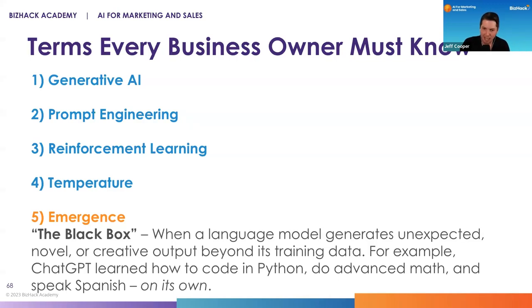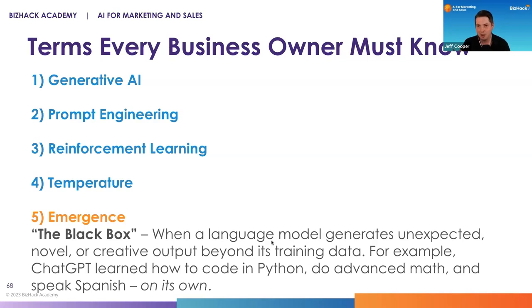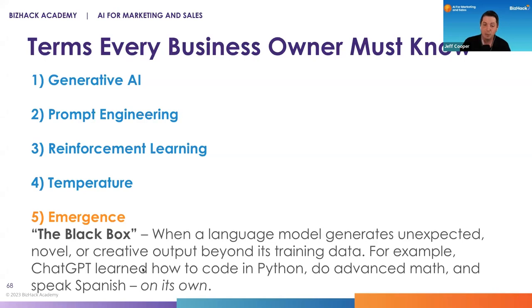Emergence — this is the black box. When you train language models with larger and larger sets of data, or add layers to the neural networks, you start to see emerging features you didn't explicitly train: the ability to write code, do math, speak Spanish, answer questions. These are things the machine learned on its own without us explicitly training it. It's led to wild advancements, but it's also a bit concerning. We don't know what the next feature that emerges will be. There have already been issues with ChatGPT teaching somebody how to create a bomb or hijack a plane — very dangerous behaviors we have to be careful with.